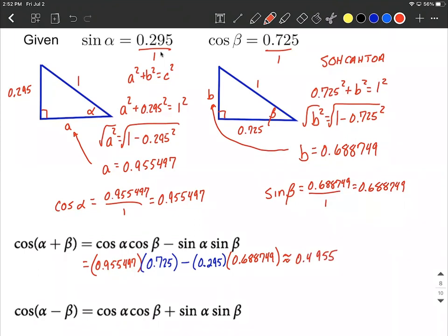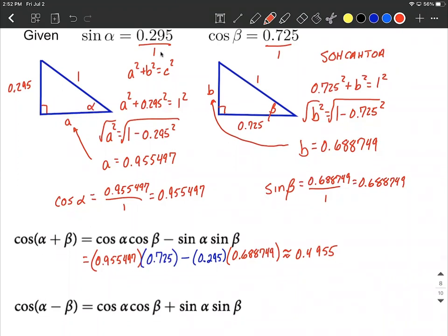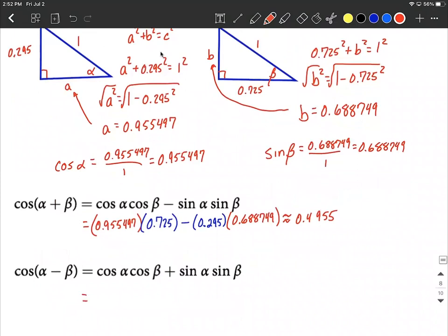Next, for the difference, it's going to be a very similar computation here. We fill in cosine of alpha. Well, cosine of alpha was 0.955497 multiplied by cosine of beta, 0.725 plus sine of alpha. Well, sine of alpha was 0.295 multiplied by sine of beta, 0.688749. Just plugging in there. And that's, again, get the calculator out, get a nice approximation going here. That is going to work out to be approximately 0.8959.